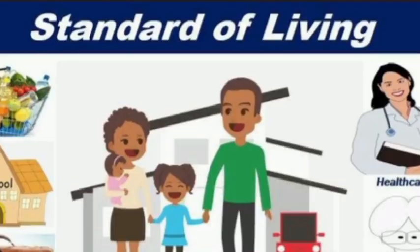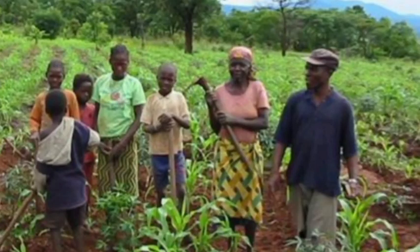Extension helps farm families across all dimensions of agricultural production. The goal is to improve their standard of living through the adoption of innovations. Everyone should be conscious that the target is farm families, and that what we want to do is improve their standard of living through the adoption of innovations.